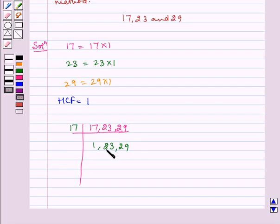Now 23 is the least number which can be divided by these 3 numbers. So dividing by 23, we get 1, 1, and 29.